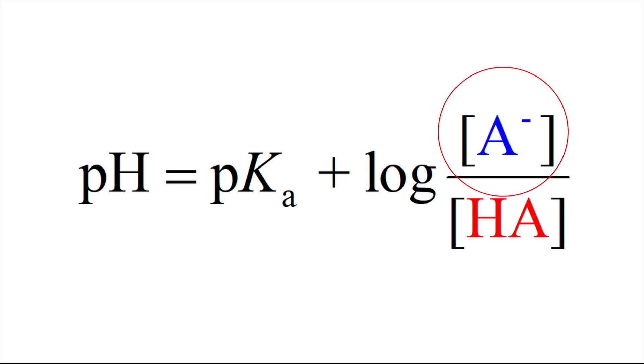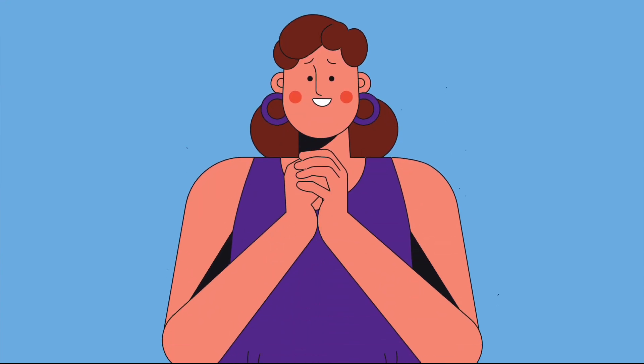A- represents the concentration of the conjugate base of the acid in the solution — this is also considered the deprotonated form of the acid. HA represents the concentration of the acid in the solution, which is in the protonated form. One more thing: buffers are at their best when you have a 1-to-1 ratio of weak acid to conjugate base. When you have these in equal amounts, this ratio equals 1. I will cover this again in the next video.